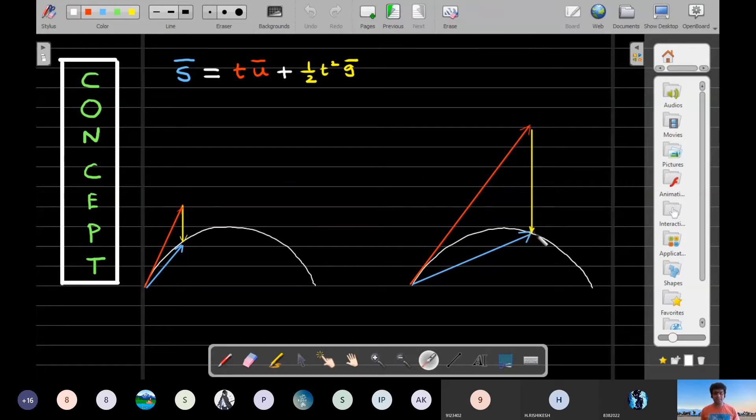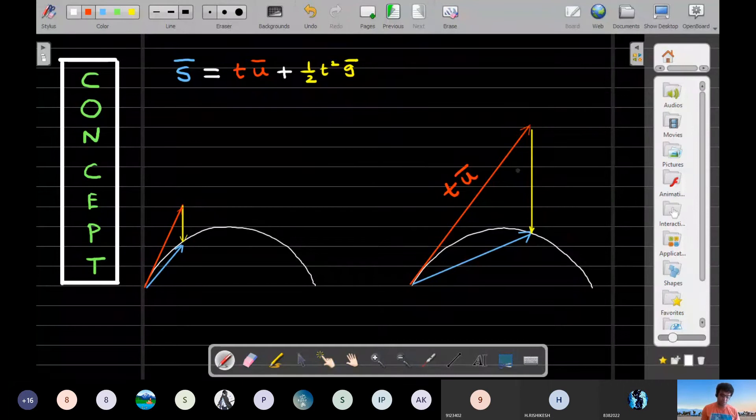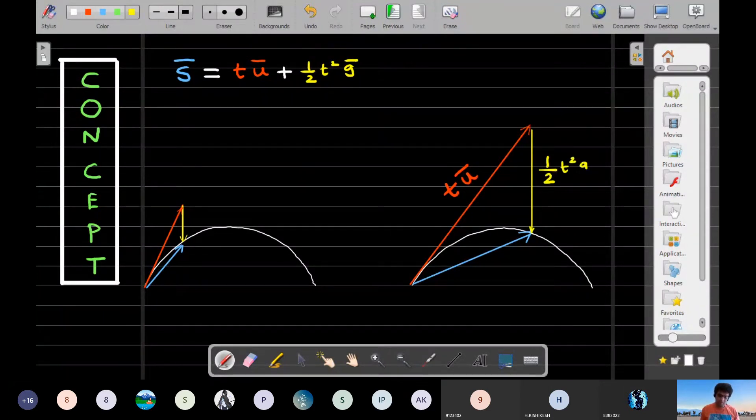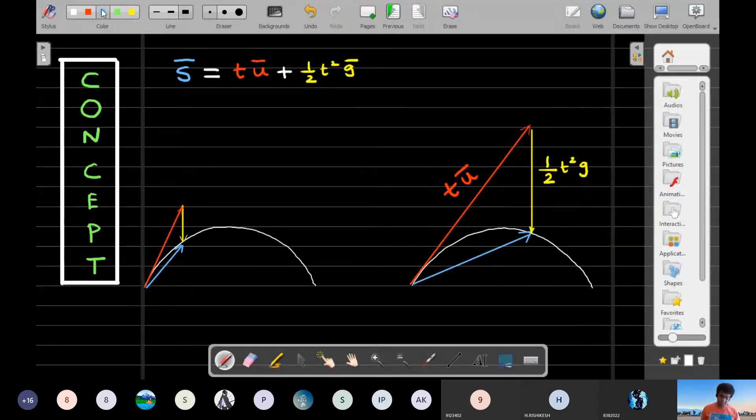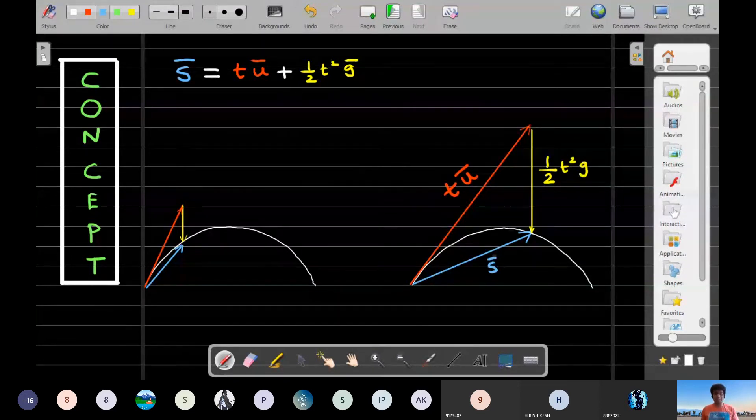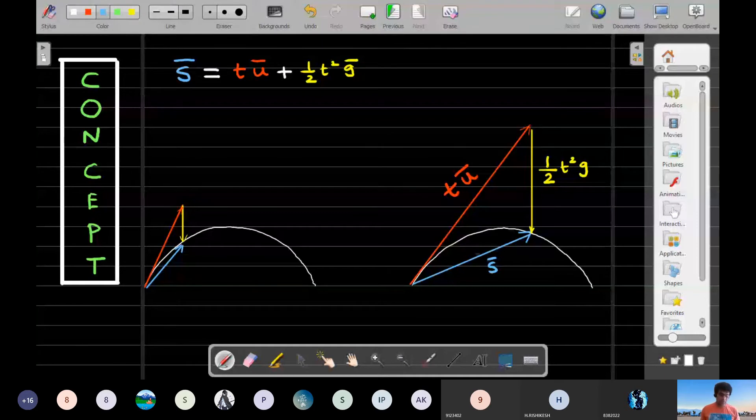Imagine I take it at a later time and the particle actually reaches here. You could see that the starting tangent, this is your t into u bar in the same time t. If the particle was dropped from rest at that particular position at the top of this diagram, then it could have come down with this much value. So the sum of these two is your s bar.